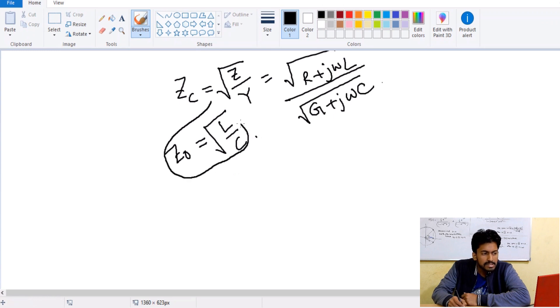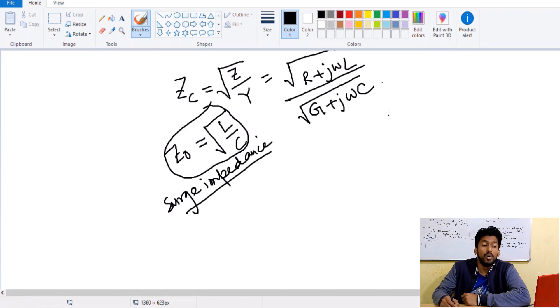And Z naught can be written as root of L by C. This thing is known to be surge impedance.